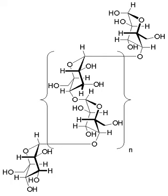Glycogen is the analog of starch, a glucose polymer that functions as energy storage in plants. It has a structure similar to amylopectin, a component of starch, but is more extensively branched and compact than starch. Both are white powders in their dry state.